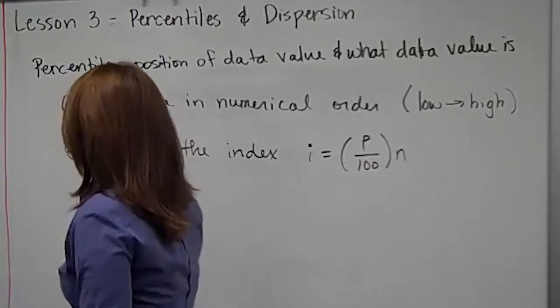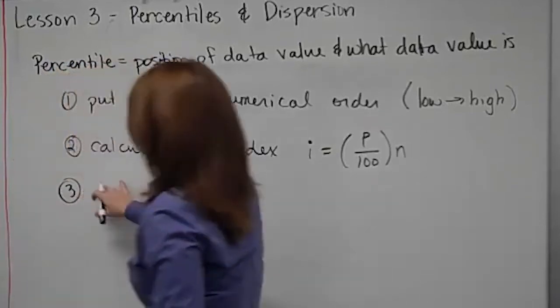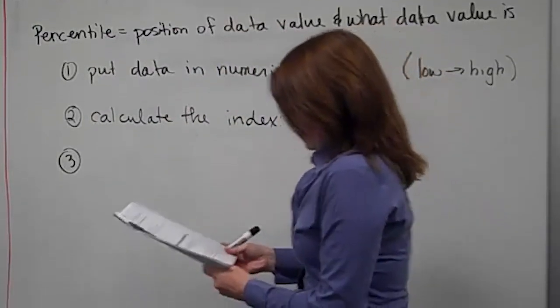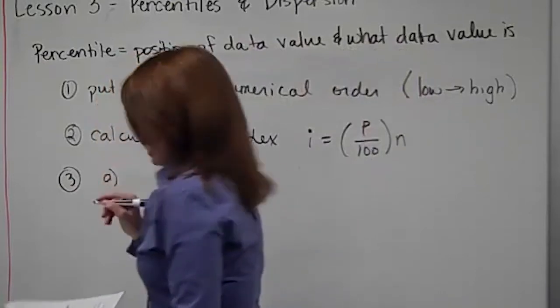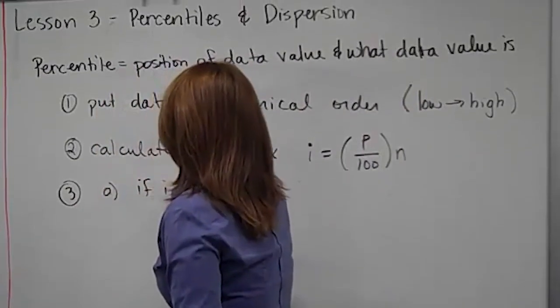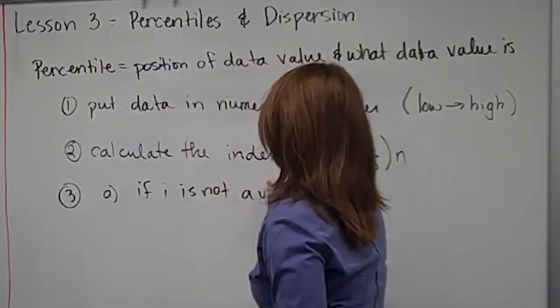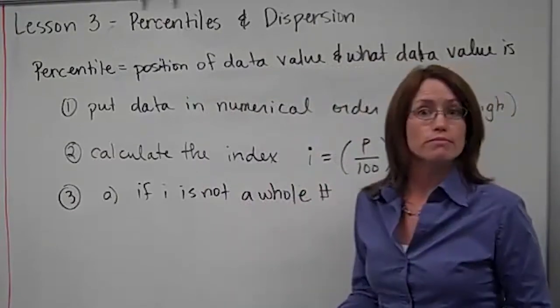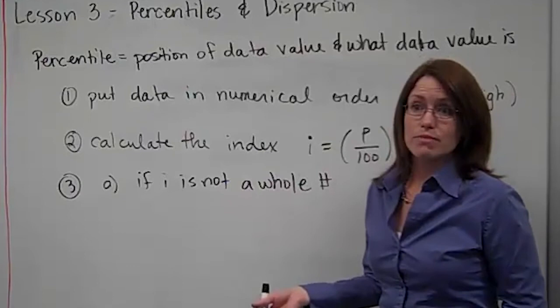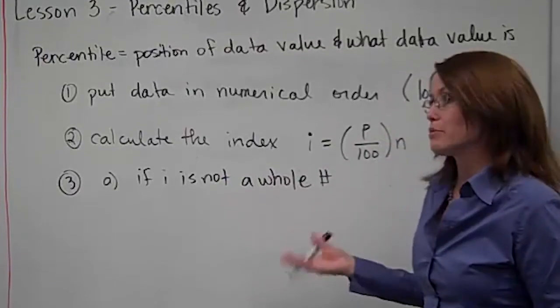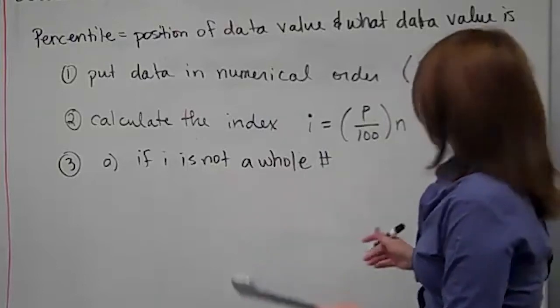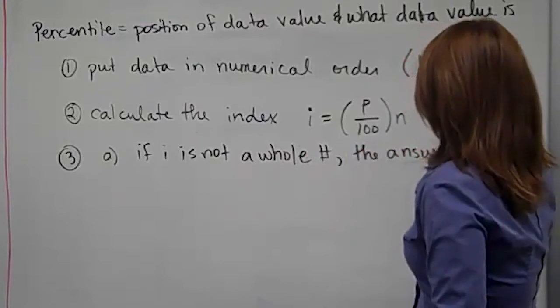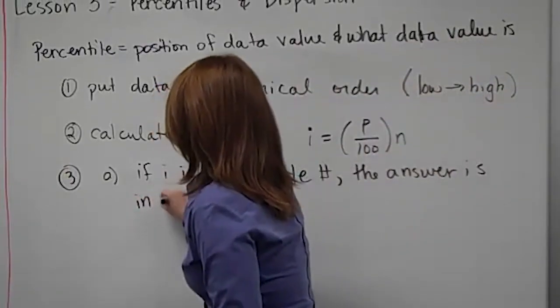Once you've calculated the index, then you can go to the data where it's in order and you're going to find the position. You have to figure out how to use this index. If i is not a whole number, you do this calculation and you don't get a whole number. You get something like 2.1 or 2.9, 10 point something. It really doesn't matter. If it's not a whole number, the answer is in the next position.